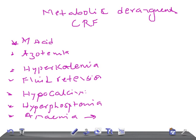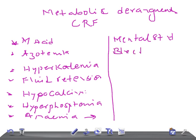Anemia occurs because of lack of erythropoietin — the kidney is not producing erythropoietin at all. Then we have mental status changes including confusion, convulsions, seizures, and coma. There is also bleeding due to disordered platelet function, and uremic pericarditis, which is very important.